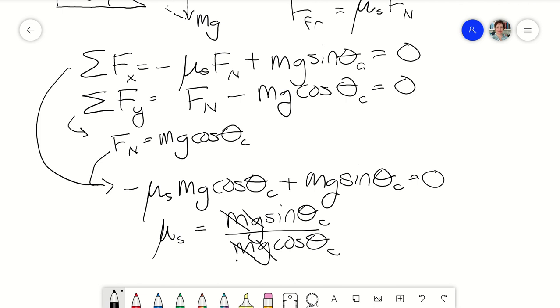Turns out a lot of things cancel. And what we're left with is tan θ, which is kind of amazing. What this says is that just the critical angle is what tells you the coefficient of static friction. It doesn't even depend on the mass of the object, which is kind of amazing.